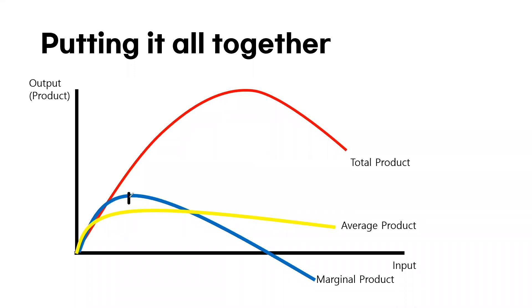And there is an interesting relationship between marginal product and total product. What you see is that as the marginal product increases, the total product increases at an increasing rate. So, basically, from here to here, the total product is increasing at an increasing rate.